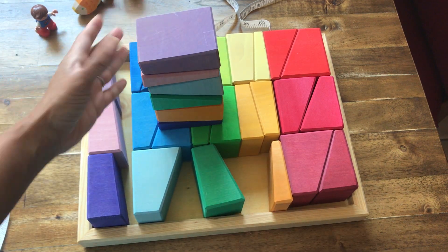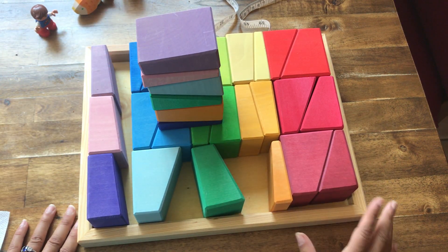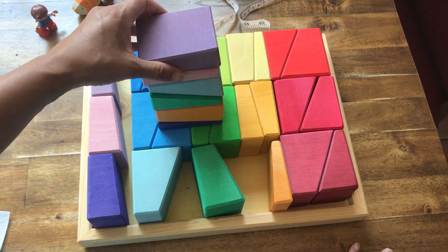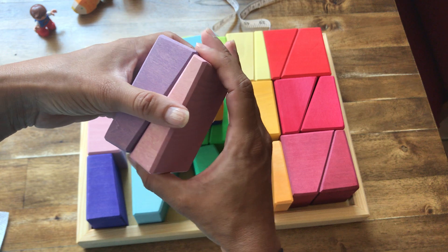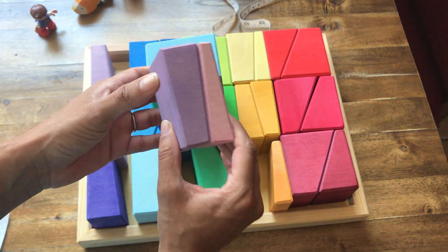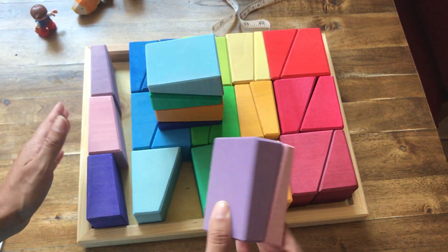And then putting it back together for younger children. It's great because they can color match them together. For older children, they can see if they can make other perfect rectangular sets and still put them into the tray.